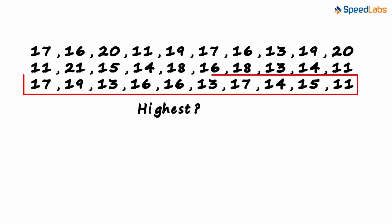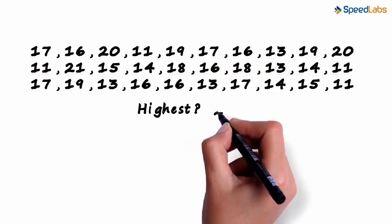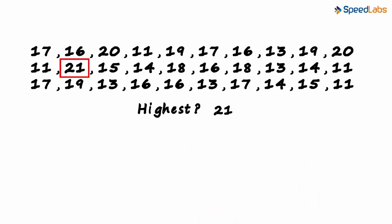Then you scan the third row and do not find a number higher than 21. So 21 is the highest marks scored by a student in the subject.